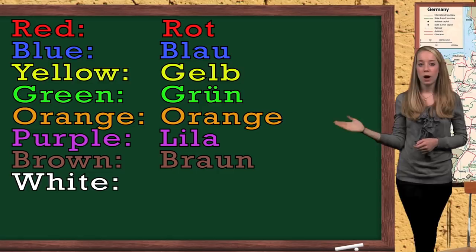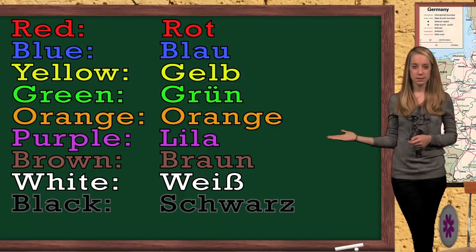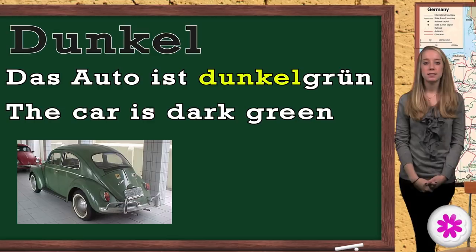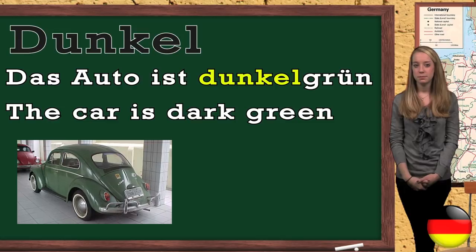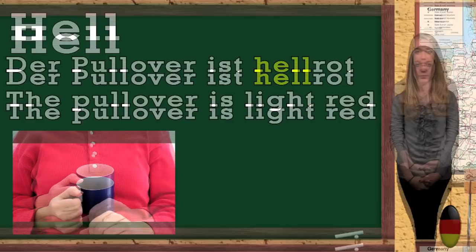Let's start with the colors. To say that a color is dark, we use dunkel. To say that a color is light, instead we use hell. Please notice that in German, hell or dunkel together with the color form one word — they are not separated as in English.